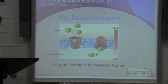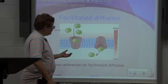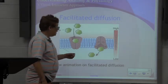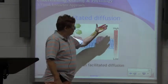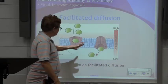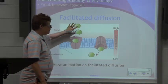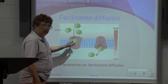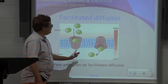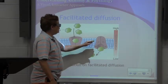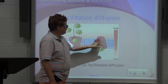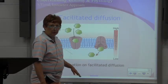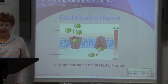This is facilitated diffusion. One example is insulin. What happens is a molecule moves from high concentration to low concentration, but it can't get through the membrane because it's not the right shape and can't pass through the protein channel directly. So it picks up a carrier protein, which changes the shape and makes it able to pass through — that's facilitated diffusion.